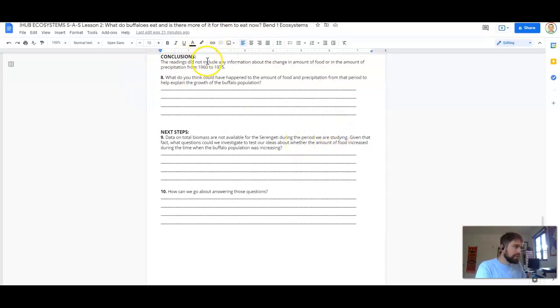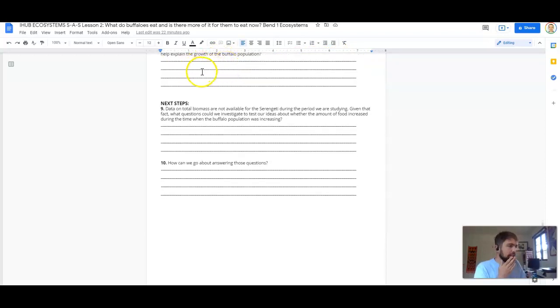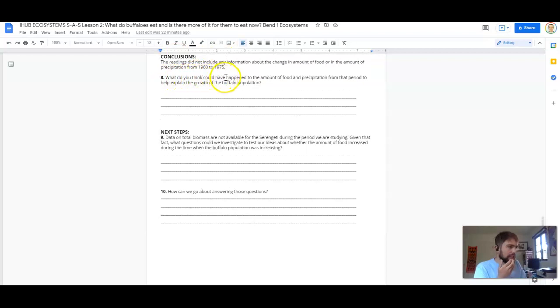Okay, so the reading did not include any information about the change in amount of food or the amount of precipitation as a giveaway, but think about what do you think could have happened to the amount of food and precipitation from that period to help explain the growth of the buffalo population. So you will reflect on these conclusions with your group and move on to the next steps about where we should go from here.